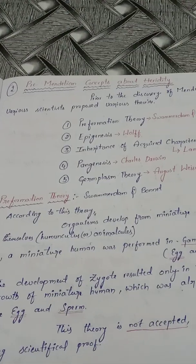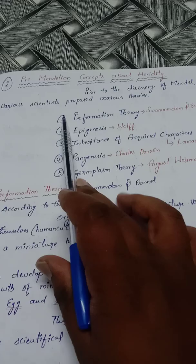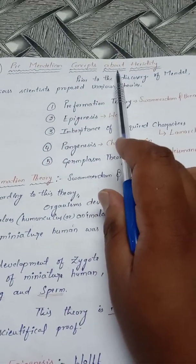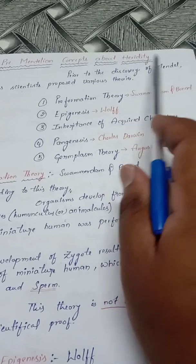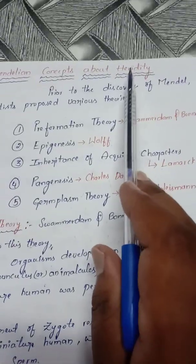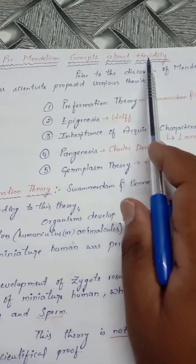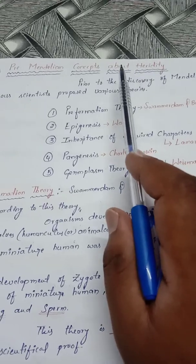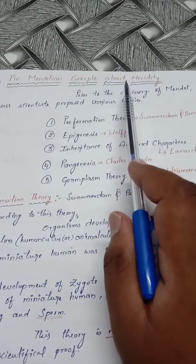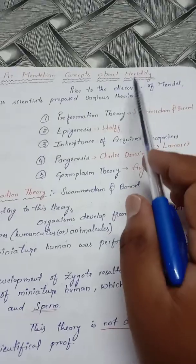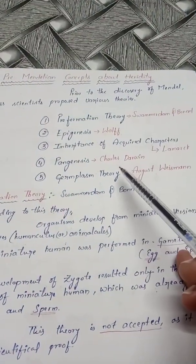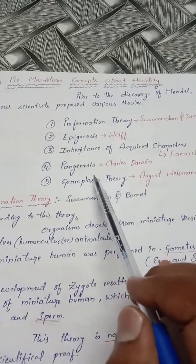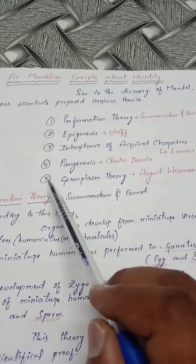Hello friends, today we are going to discuss about pre-Mendelian concepts about heredity. In the previous video we discussed about what is heredity and variation. Heredity means transfer of characters from one generation to another generation. For these questions, different scientists have given different explanations in the form of theories.